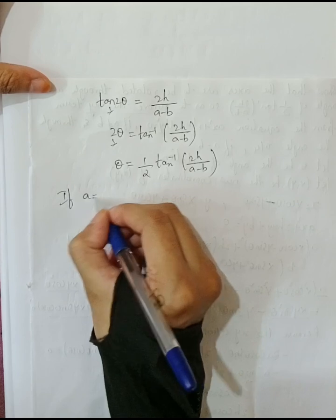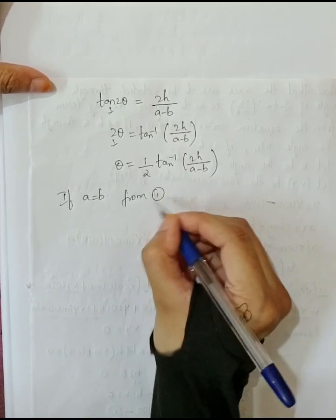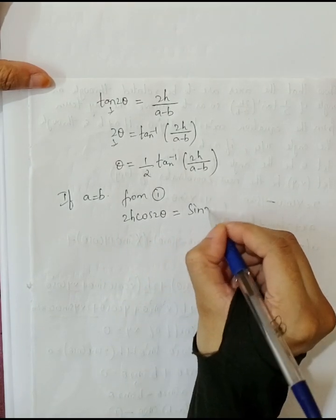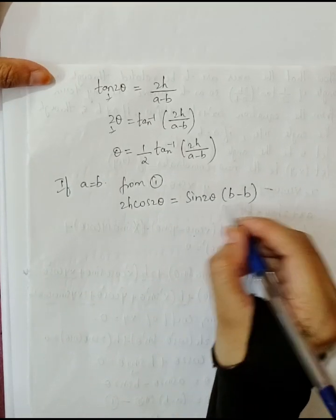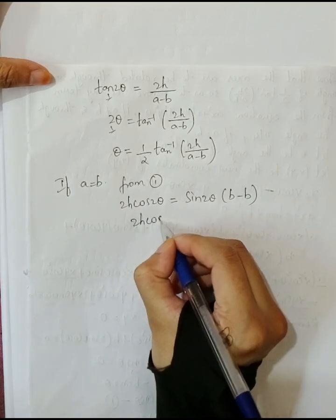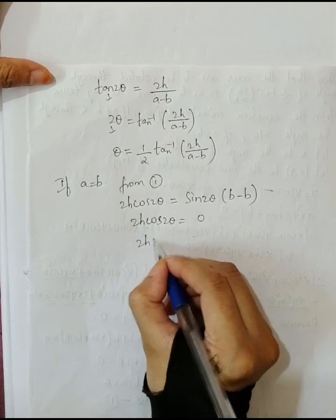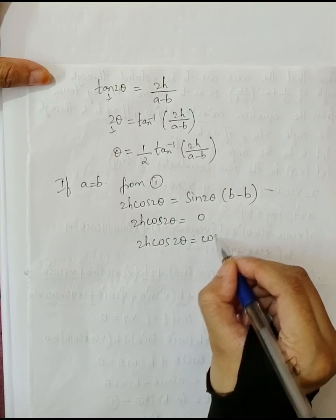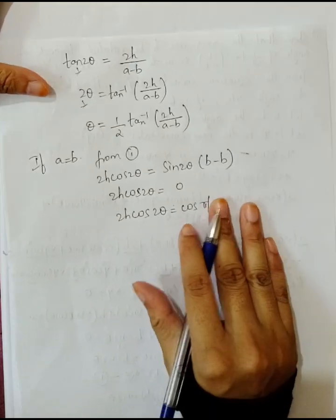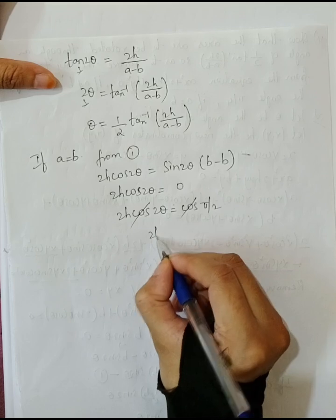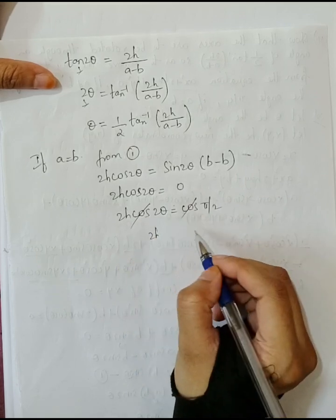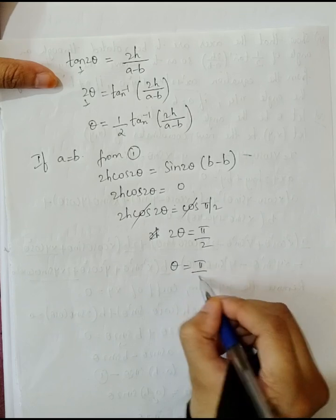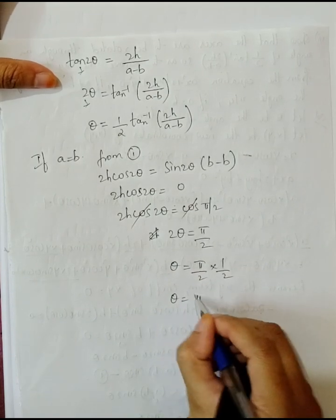Case 2: if a is equal to b. From equation 1, the right-hand side becomes (a minus b) sin 2theta equals (b minus b) sin 2theta equals 0. So 2h cos 2theta equals 0. Since 2h is not zero, cos 2theta equals 0, which means cos 2theta equals cos(pi by 2). Therefore 2theta equals pi by 2, and theta equals pi by 4.